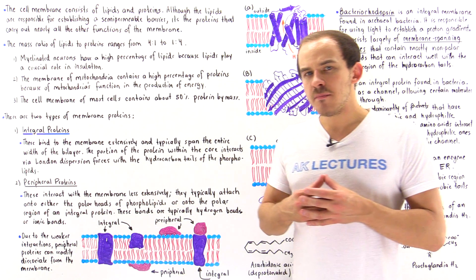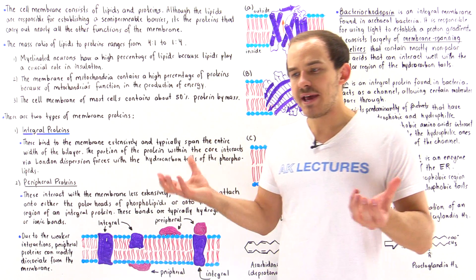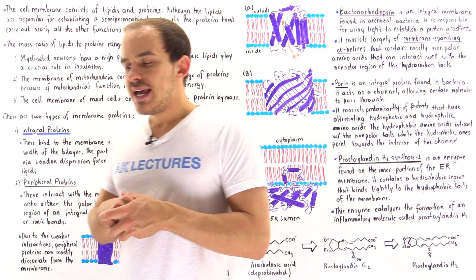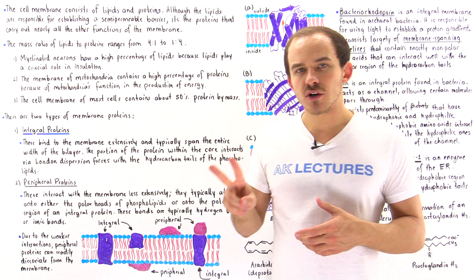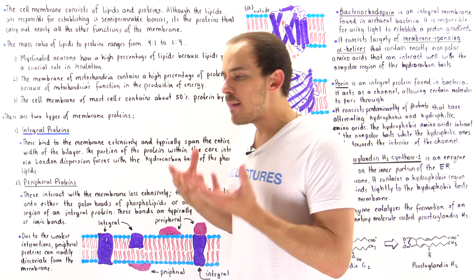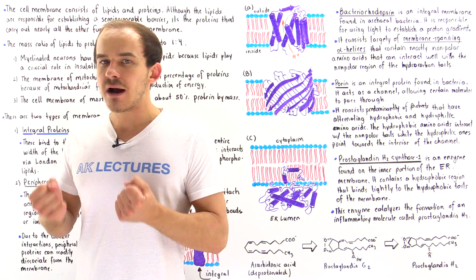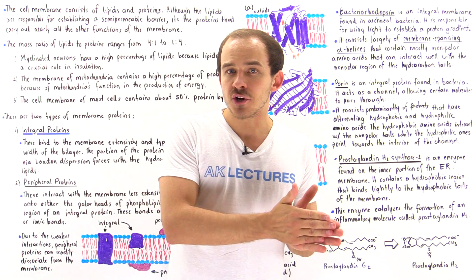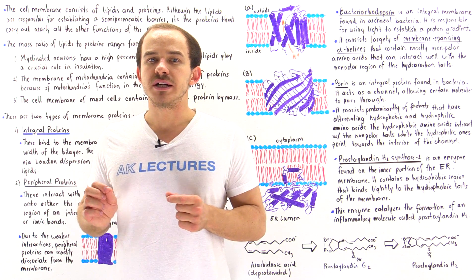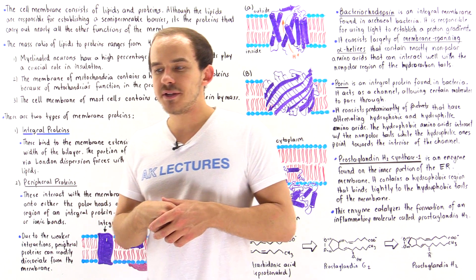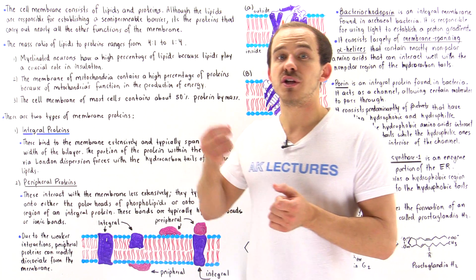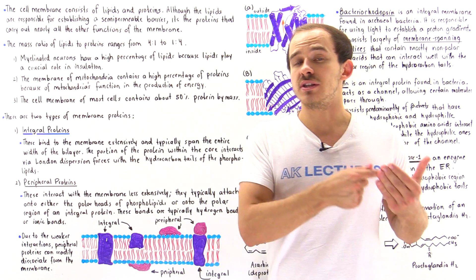Lipid bilayer membranes consist of two major biological molecules: lipids and proteins. The lipids have two functions. Function number one is to actually create a semi-permeable barrier — a barrier that separates the inner aqueous environment from the outer aqueous environment. Function number two is to create a medium, an environment in which the proteins can dissolve in.